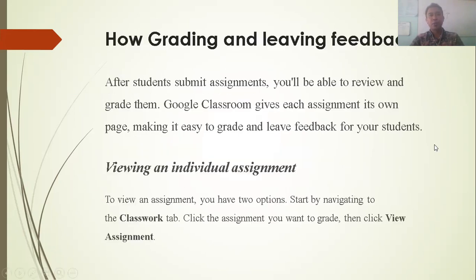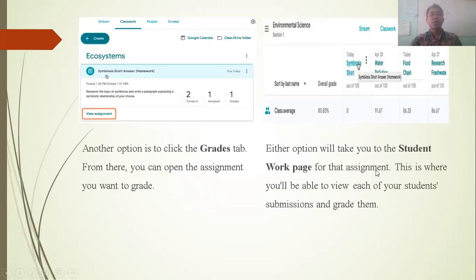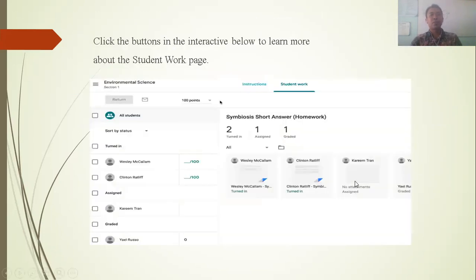For grading, after students submit their assignment, you will be able to review and grade them. Google Classroom gives each assignment its own page, making it easy to give feedback to your students. To view submissions, navigate to the Classwork tab, click the assignment you want to grade, then click View Assignment. Another option is to click Grade from there. Either option will take you to the Student Work page for that assignment, where you can view student submissions and grade them.